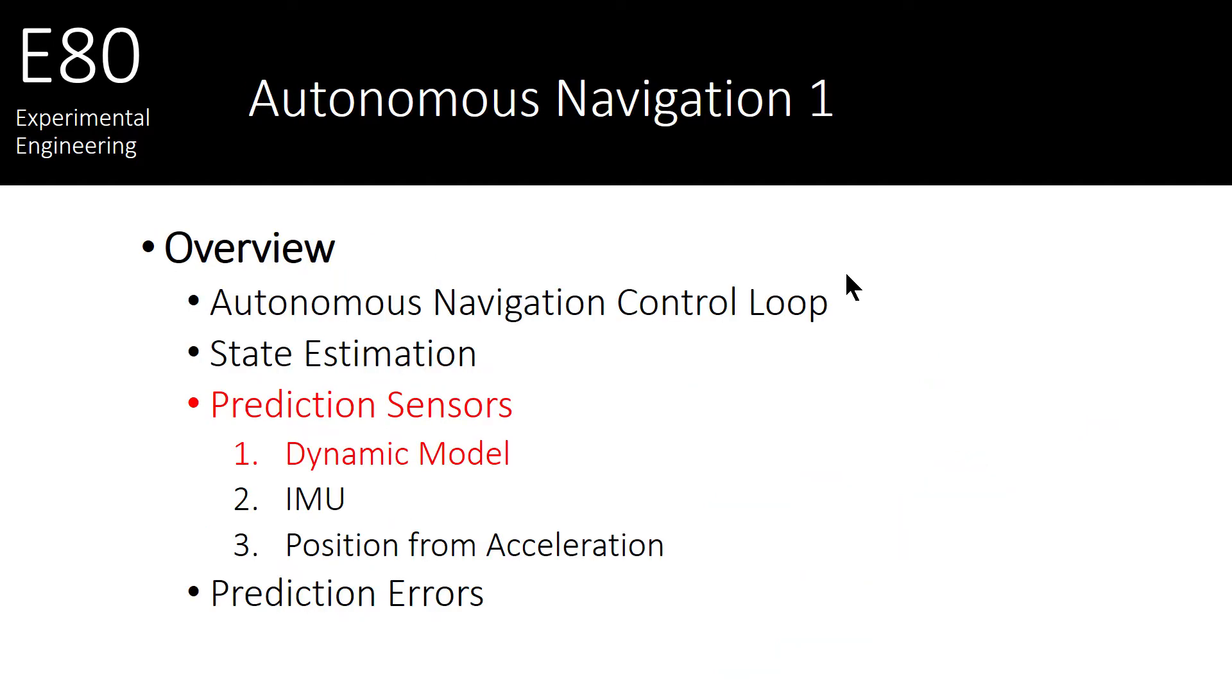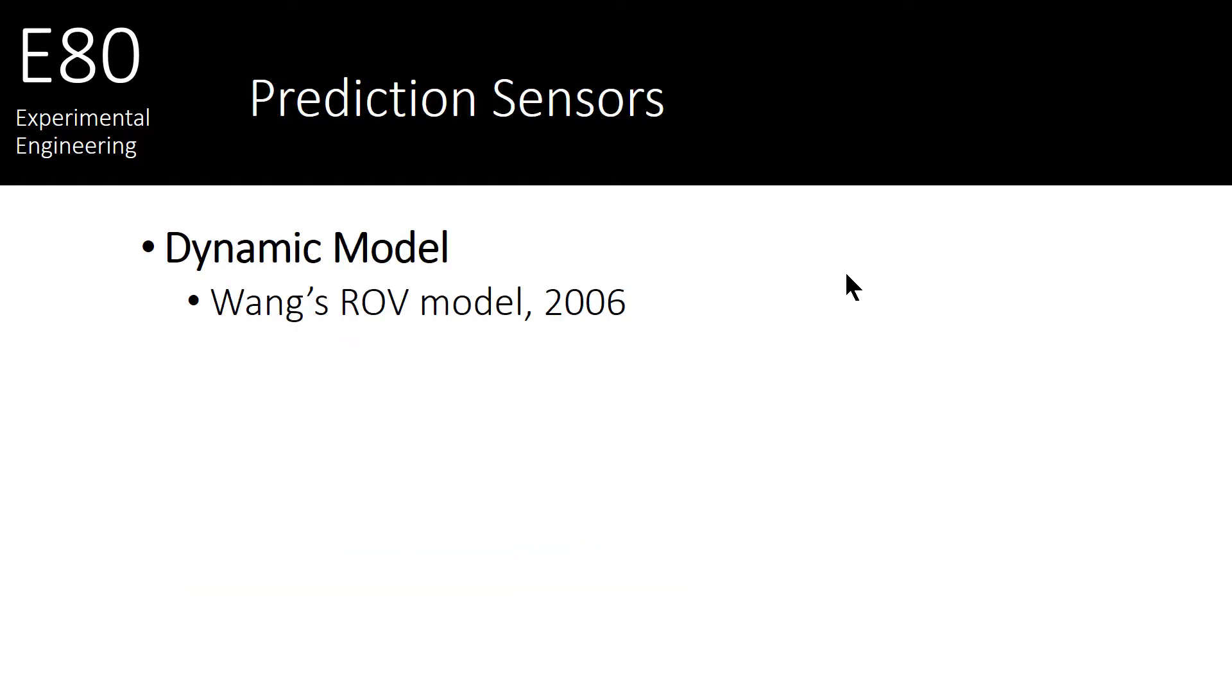We're going to talk about, in particular, two key ways to get prediction of state estimates. First is using a dynamic model. Some of our past videos showed a remotely operated vehicle or underwater vehicle model that was published in 2006, which is a set of differential equations that look like this. And if you don't remember, this is really just F equals MA. We did some lumped element modeling, which included a whole bunch of things like mass times acceleration. And then there were drag terms and input forces from thrusters. And this was actually the simple model.